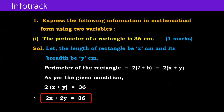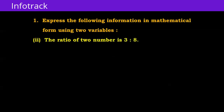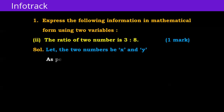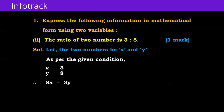Therefore 2x + 2y = 36. So we have equation: 2x + 2y = 36. Question number two: the ratio of two numbers is 3 is to 8. Let the two numbers be x and y, so as per the given condition x/y = 3/8. Therefore 8x = 3y, so 8x - 3y = 0.